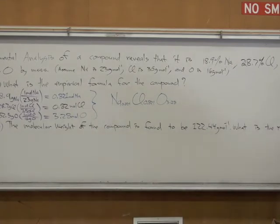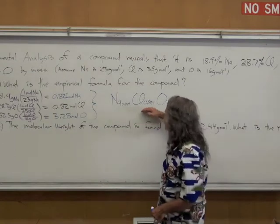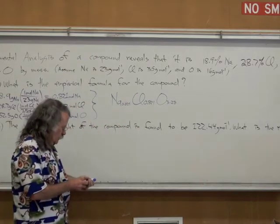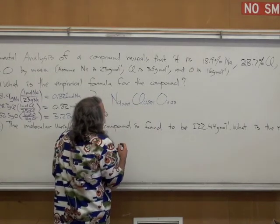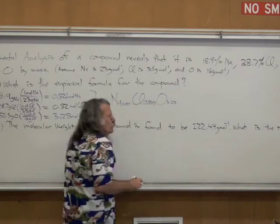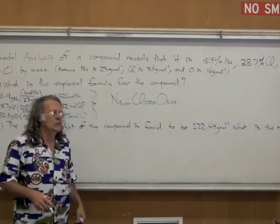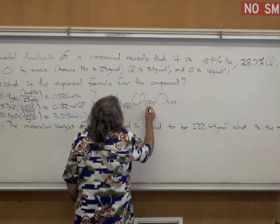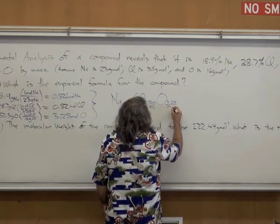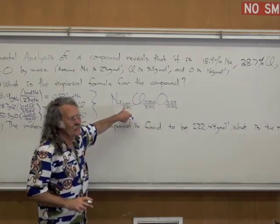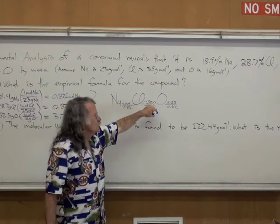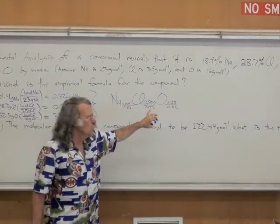But we now can simplify. How do I simplify this? I divide by the smallest number here. And the smallest number in this case turned out to be the same number for both of these. So it's going to be 0.821 divided by 0.82. This is going to be 1, as well. That difference between 1 and here is negligible. That's experimental certainty.